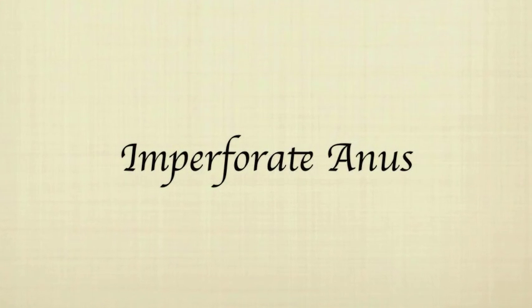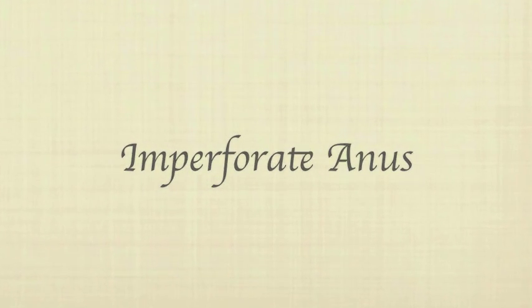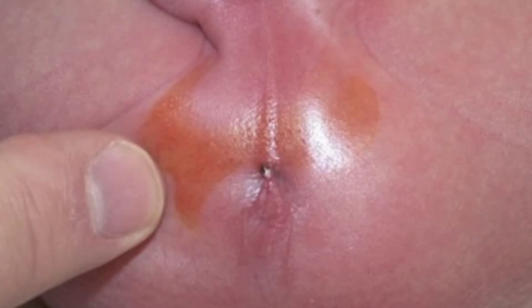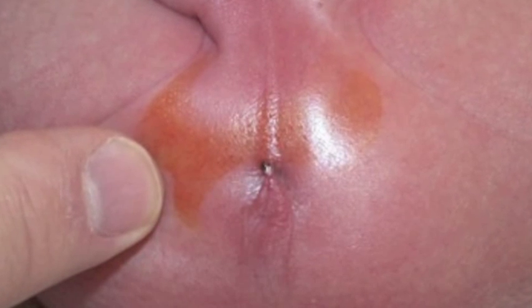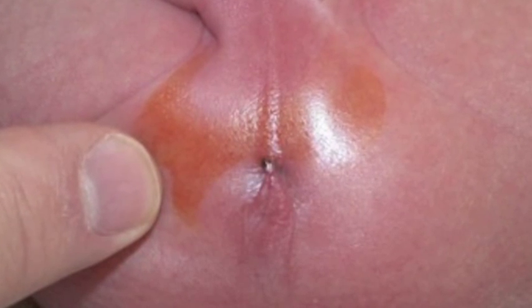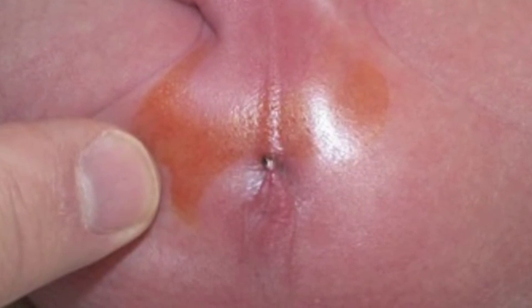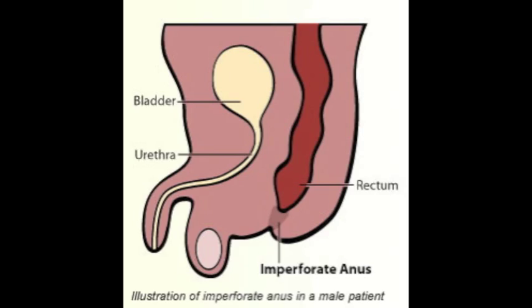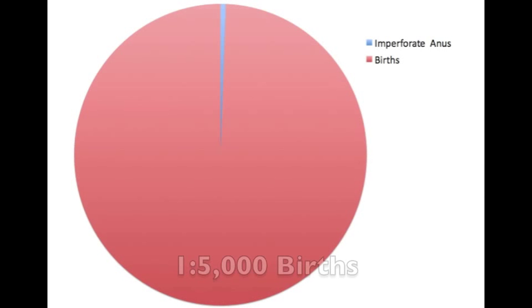The Imperforate Anus is a congenital defect in which the opening to the anus is misplaced or absent. It is present in 1 in 5,000 live births.